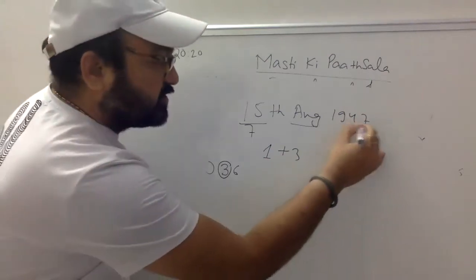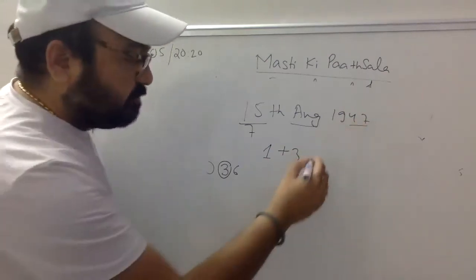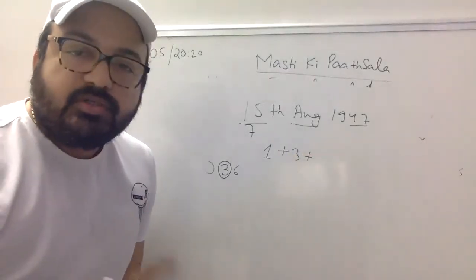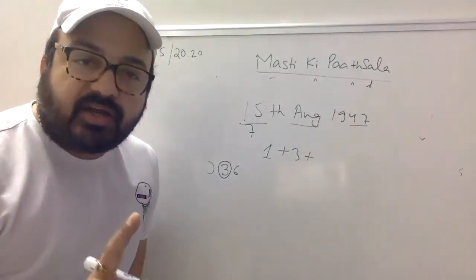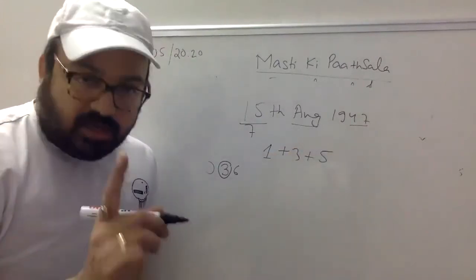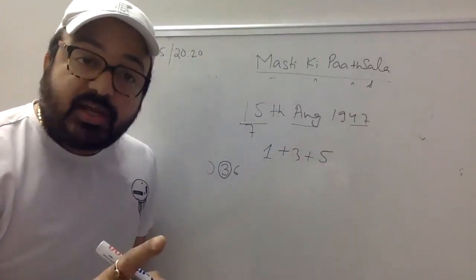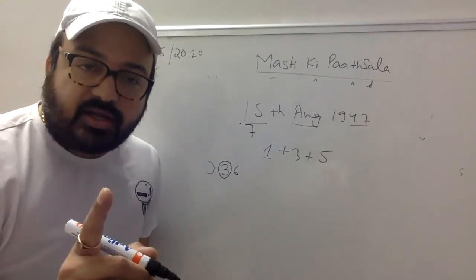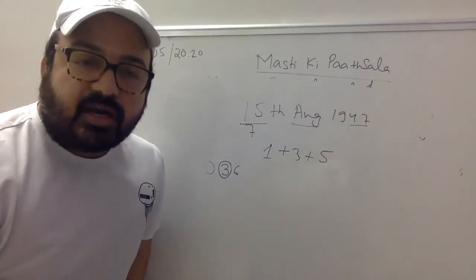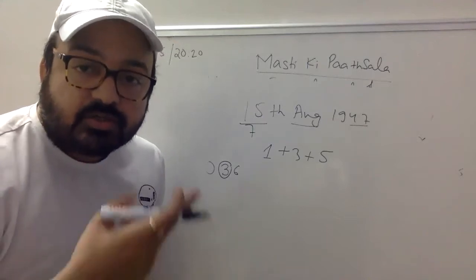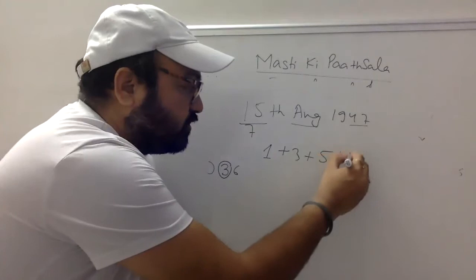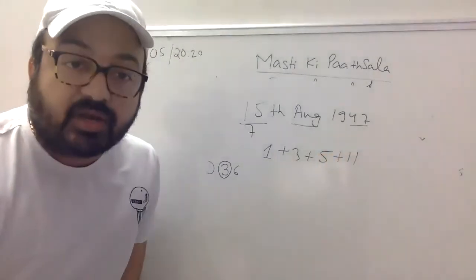अब last two digits: 47. पहले 7 से divide करो — 47 को 7 से divide करो, remainder देखो: remainder है 5. Leap year के लिए: 47 को 4 से divide करो, quotient आया 11. तो 44 — quotient है 11.